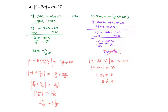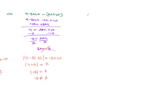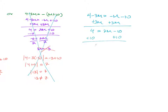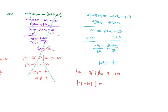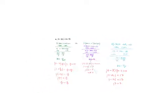My mistake here was that I did not distribute that negative. So let's do it correctly. I have 4 minus 3m equals negative m minus 10. Adding 3m on both sides: 4 equals 2m minus 10, plus 10 gives 14 equals 2m, divided by 2 gives m equals 7. Checking: 4 minus 3 times 7 equals 7 plus 10. So 4 minus 21 equals 17. The absolute value of negative 17 equals 17. So 17 equals 17 — this is a solution. So my two solutions here are negative 3/2 and 7.